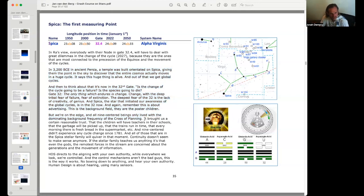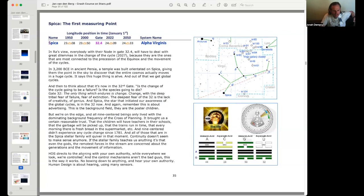What this is really saying is we have never, as nine-centered beings, experienced a different incarnation cross. We've only ever lived with the dominant background frequency of the Cross of Planning. This is 16 and 9, which are collective logic, and then 37-40, which are tribal. It brought a real trust of the collective to take care of us, a trust of the tribe to take care of us. It brought us a certain reasonable trust that children will have teachers in schools, the garbage will be picked up, trains run on time, and every morning there's fresh bread in the supermarket.